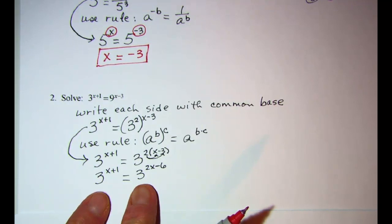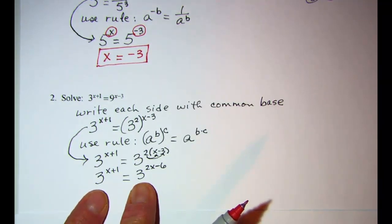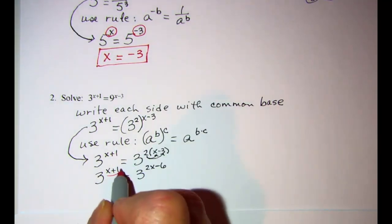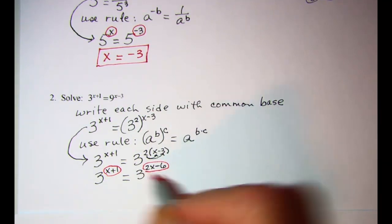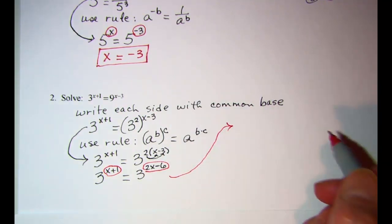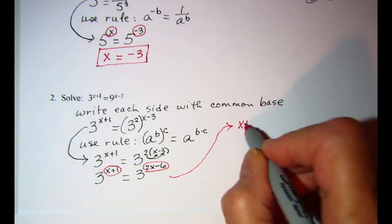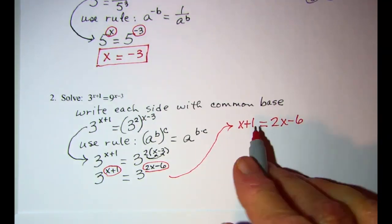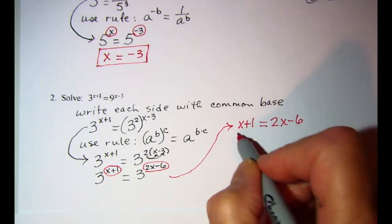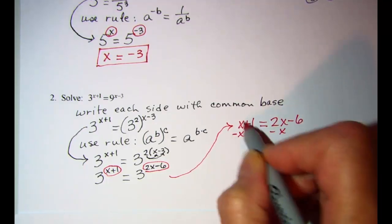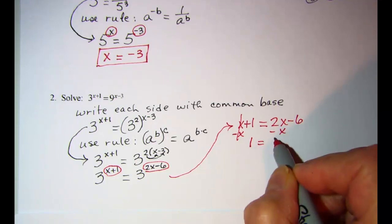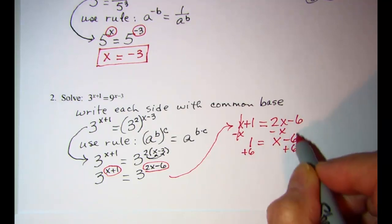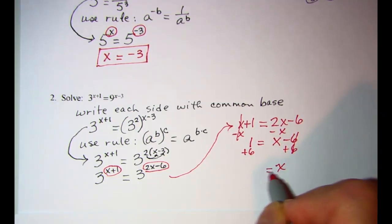Now since we've stated that these two sides are equal and we know that our bases are equal, then that means that our exponents have to be equal. Let me write that x+1 = 2x-6. Now we just have a linear equation we can solve. Subtract x from both sides and we have 1 = x-6, add 6 to both sides, and x = 7.